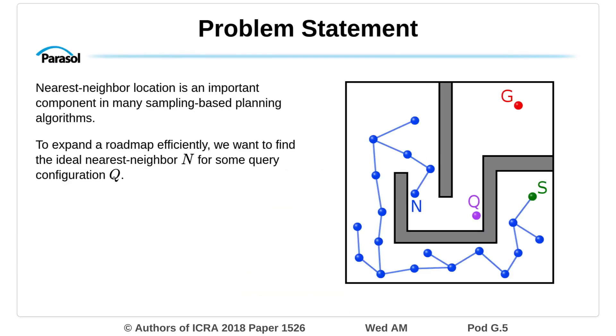Nearest neighbor location is an important component in many sampling-based planning algorithms. To expand a roadmap efficiently, we want to find the ideal nearest neighbor for some query configuration Q.